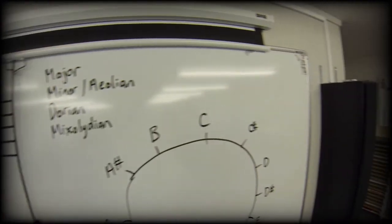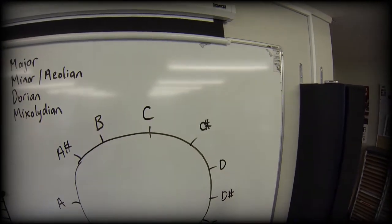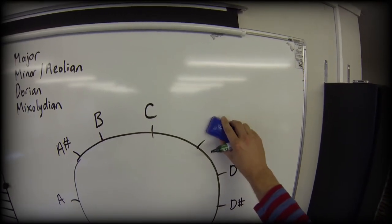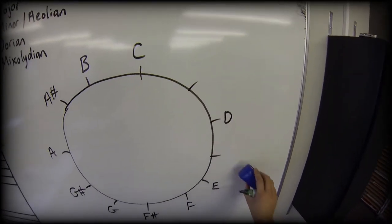Which means I can now remove these steps from my clock. I'm going to remove C sharp, D sharp, F sharp, G sharp, A sharp.